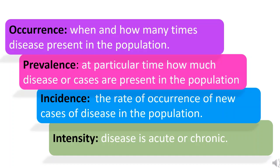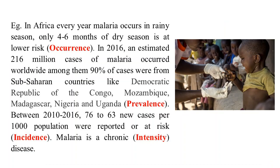Let's understand this with an example. In Africa, malaria occurs every year in the rainy season, and only 4 to 6 months of dry season are at lower risk — this is occurrence. In 2016, an estimated 216 million cases of malaria occurred worldwide, and among them, 90% of cases were from sub-Saharan countries like the Democratic Republic of the Congo, Mozambique, Madagascar, Nigeria, and Uganda. This is prevalence.